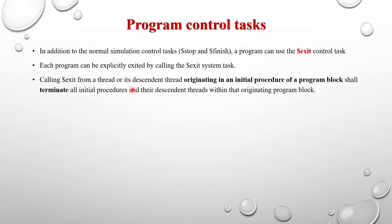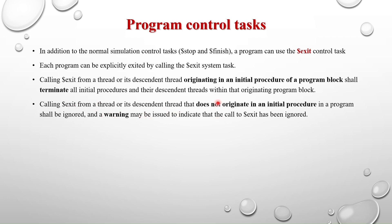Calling $exit terminates all initial procedures and their descendant threads within that originating program block. If you have three initial blocks in a program block and one of them calls $exit, it will terminate all ongoing processes in the program block — you exit the program block even if other processes are still pending. But the process must originate from the initial block of a program block.